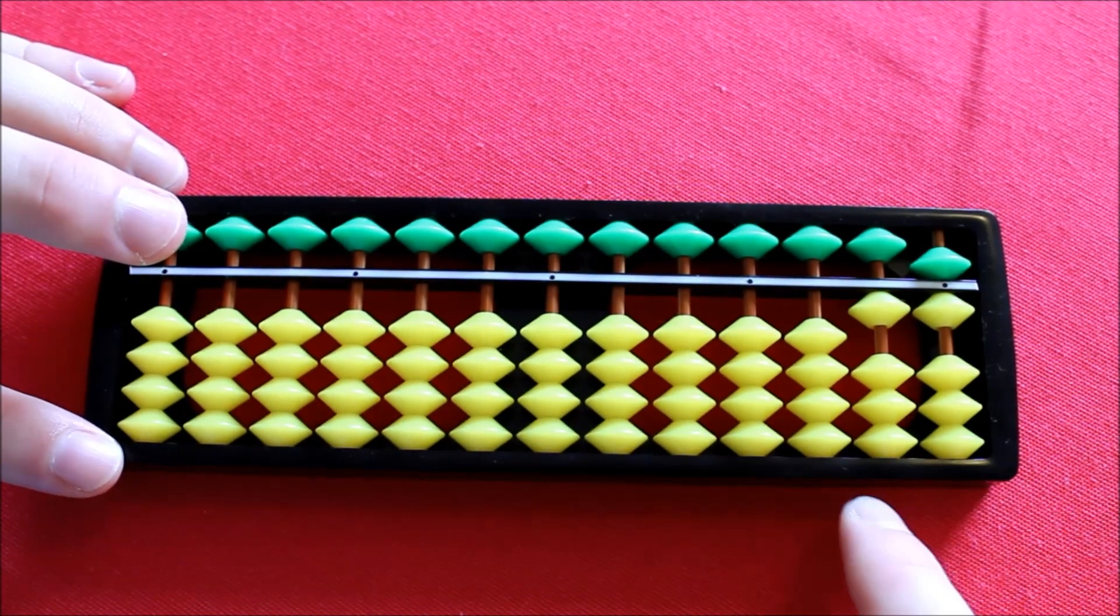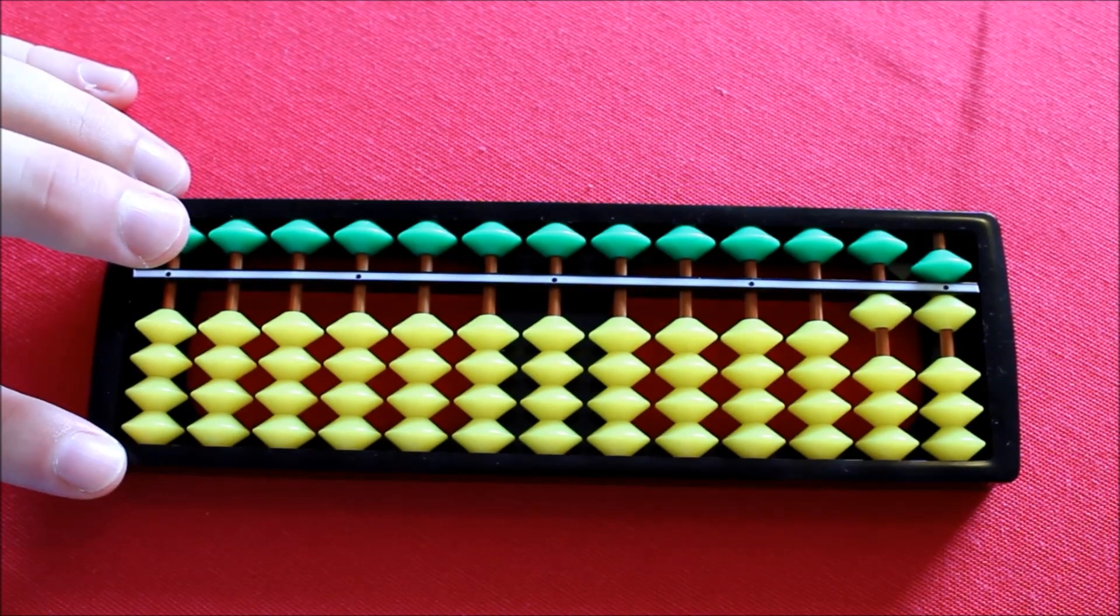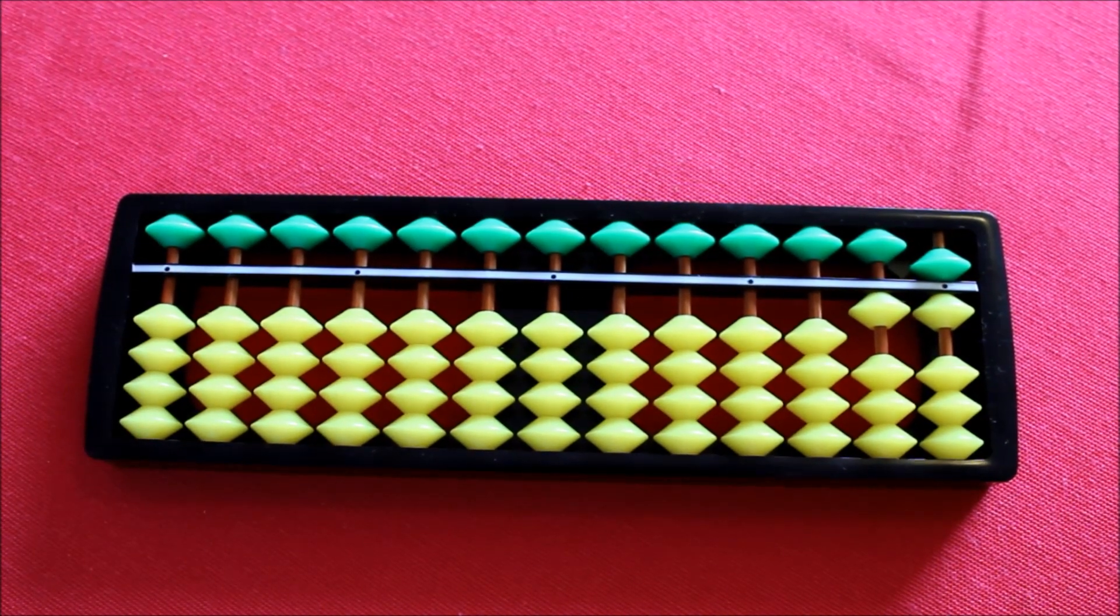And what have we got on the Soroban? 1 here, 5 and 1 here, that's 6, 16. And 8 plus 8 equals 16.